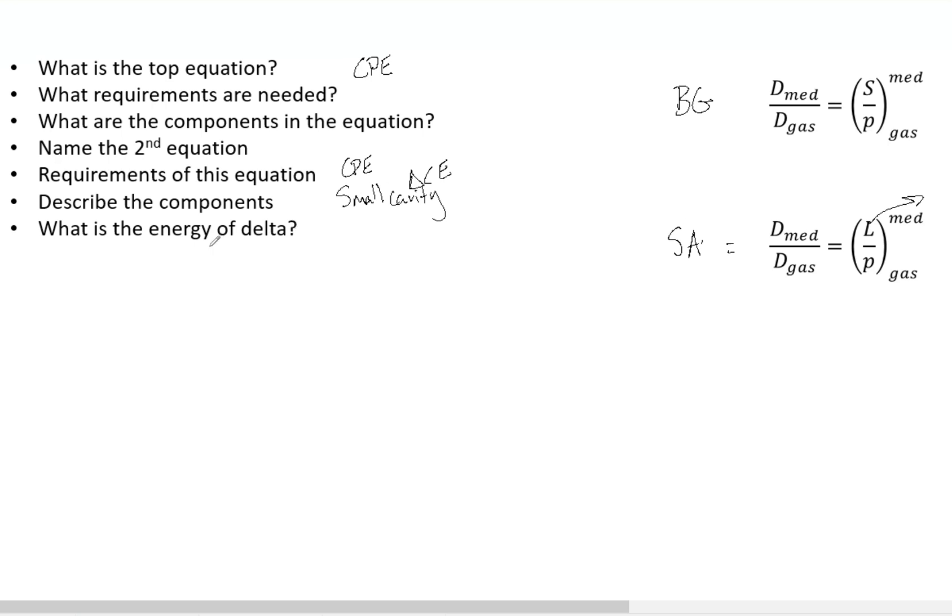And then finally, what is the energy of that delta? While we're talking about it. So in the Spencer-Attix theory, delta here, delta is equal to 10 to 20 keV. Anything less than this delta, anything less than this threshold assumes that the electrons release their energy close to the site.